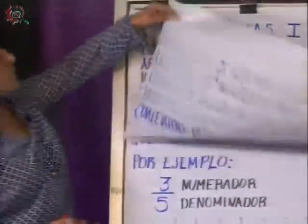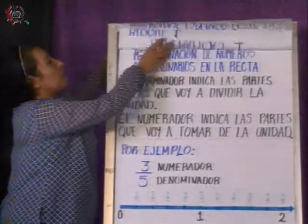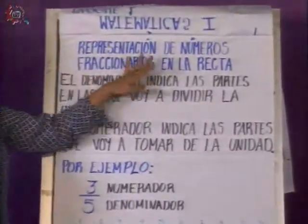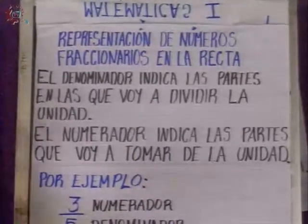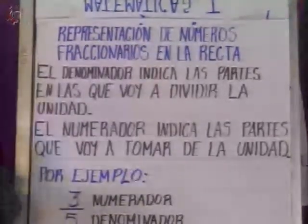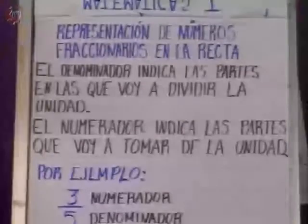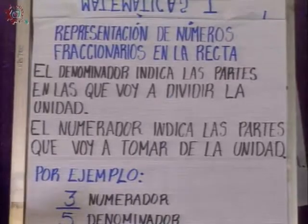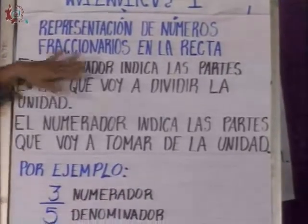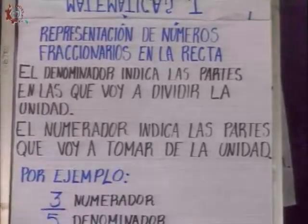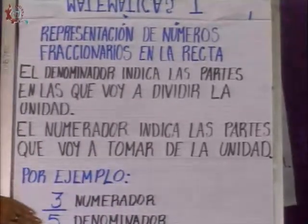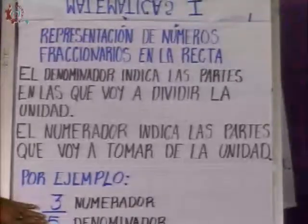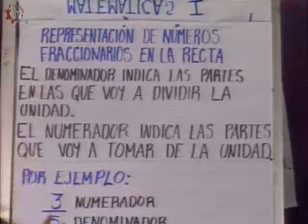Within the activities we are going to do, the first one consists of the representation of fractions on the number line. To be able to locate them, we first start with fractions and then we will use decimal numbers. For this, there is a convention — a way in which we can represent them. We have to go back to the concept of fraction and its elements: the numerator and the denominator, because these will indicate how I am going to locate it on the number line.